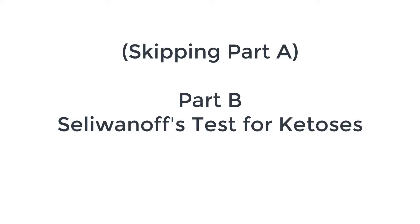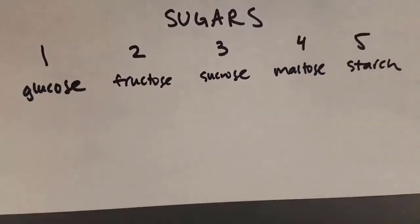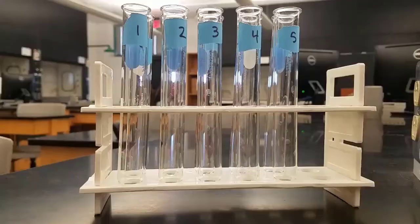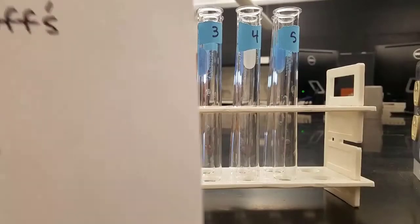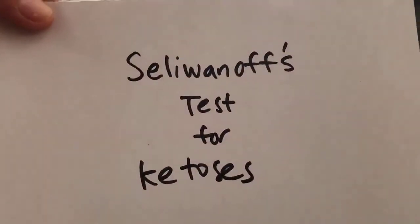We're skipping part A, so not looking at any food samples. We're going to jump right into part B, which is Seliwanoff's test for ketoses. You might want to pause here — this tells you which test tubes 1, 2, 3, 4, and 5 contain.